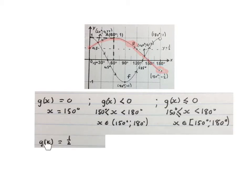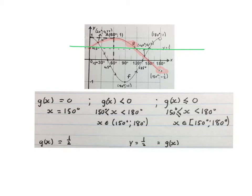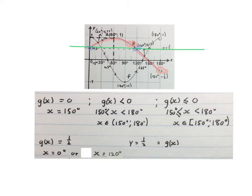The next question asks where is g of x equal to a half. A half is where y is equal to a half. I drew a green line where y equals a half — the question asks where the g of x graph equals this green line. The answer is x equals 0 degrees at that point, or x equals 120 degrees at that point. Please stop the video and get your brain around this.